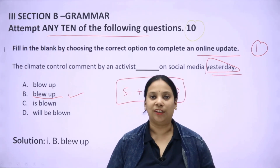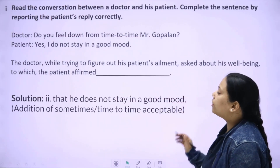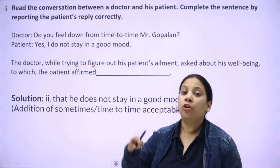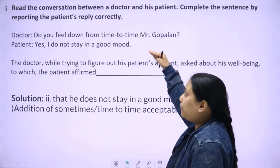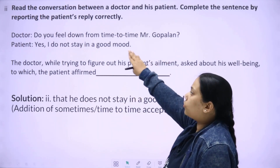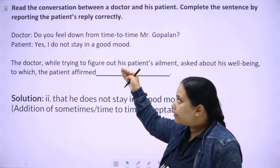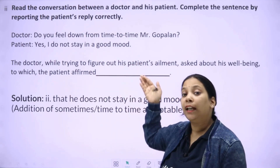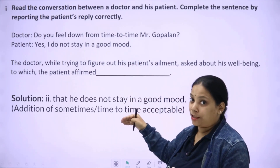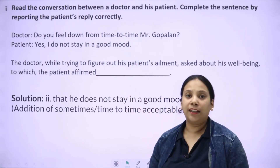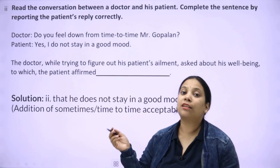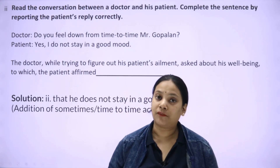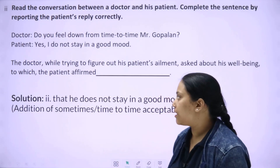The next question is a conversation between a doctor and a patient in direct speech, which you need to convert into indirect speech. For indirect speech, you must know the rules — when the reported speech is in present tense, it is converted to past tense. However, there is a twist: if the reporting verb like 'said' is in present tense (i.e., 'says'), the reported speech remains in the same tense.